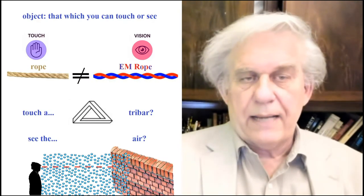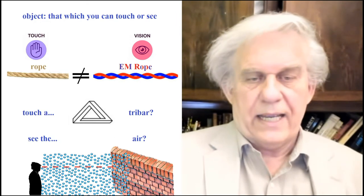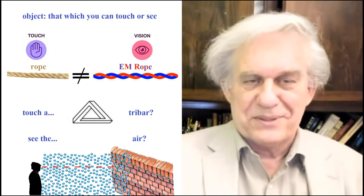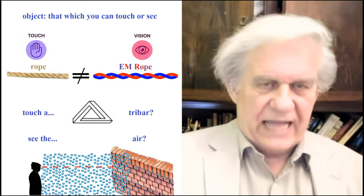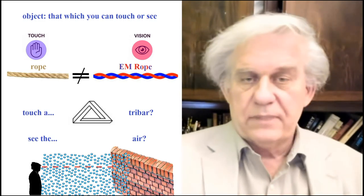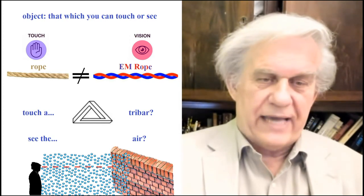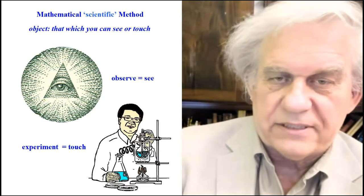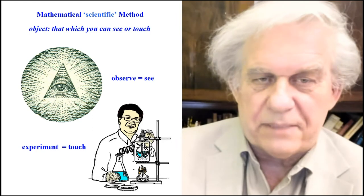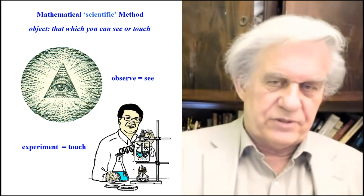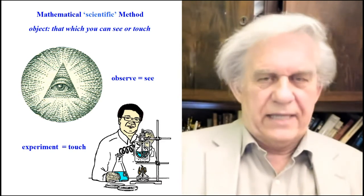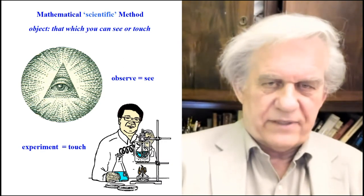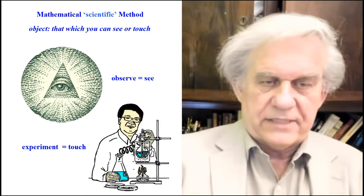So here's what an object is. An object is not just that which you can touch or see — that's the version from the establishment. We can't touch a tri-bar and we can't see an idea, so are we going to say these are not objects, even though they're made of atoms? What are these — concepts? So this is the mathematical version of an object: that which you can see or touch, meaning you observe it or do some kind of experiment. That's where the 'see/touch' criteria comes from, and that's also where the observer and experiment enter into the so-called scientific method — which we call the mathematical method. It's got nothing to do with the scientific method.